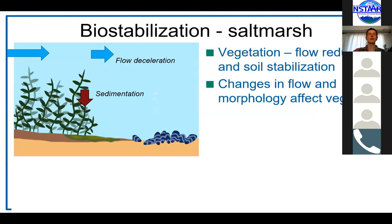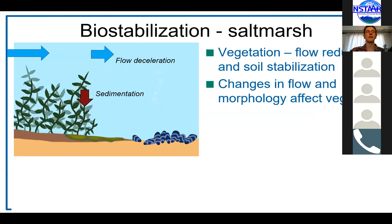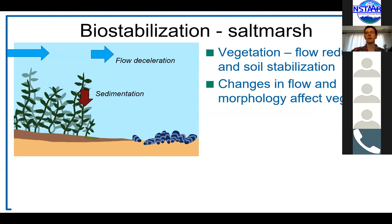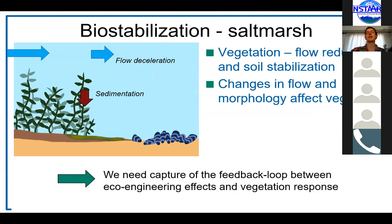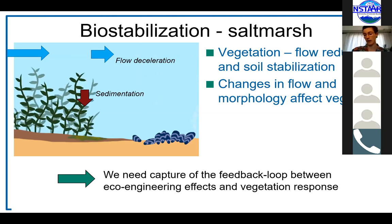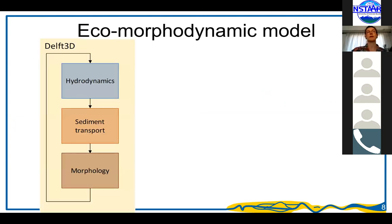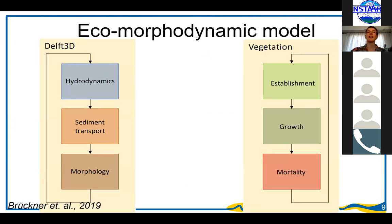If we account for ecoengineering effects, we also need to know how vegetation reacts to the changes it applies to its environment, because it will not grow when flow velocities become too high or inundation periods change. To understand the effect of vegetation on estuaries, we need to capture this feedback loop between the ecoengineering effects of the species and the vegetation response. That's why we developed this eco-morphodynamic model — on one hand a hydromorphodynamic model parameterized in Delft3D, which is a sophisticated software package used extensively in the Netherlands, and coupled to a dynamic vegetation code in MATLAB that accounts for establishment, growth, and mortality.